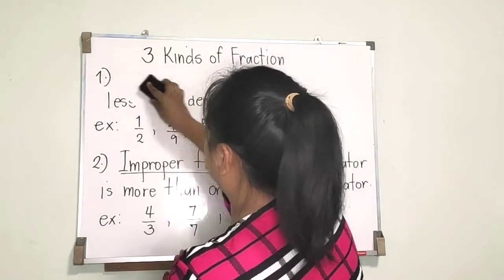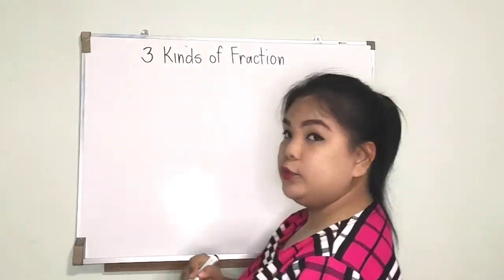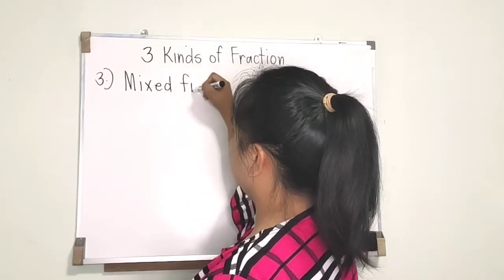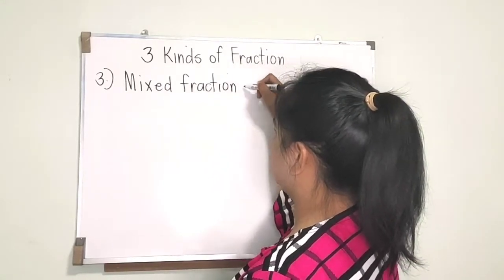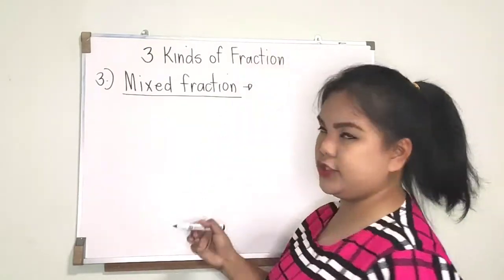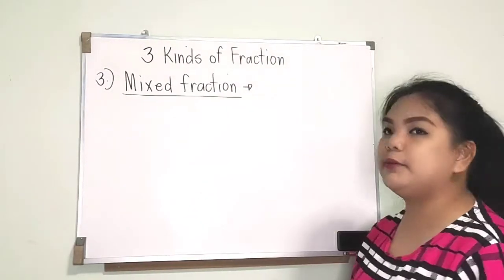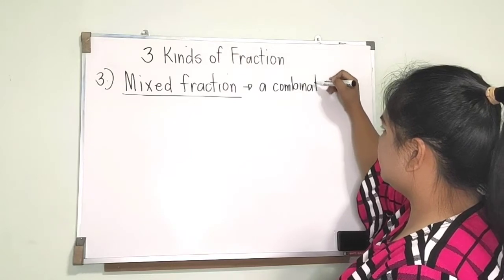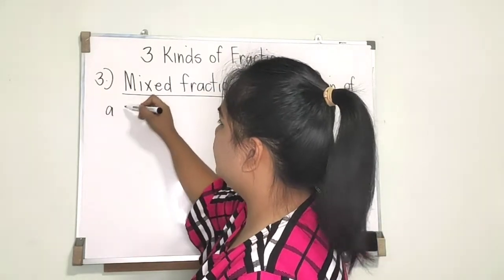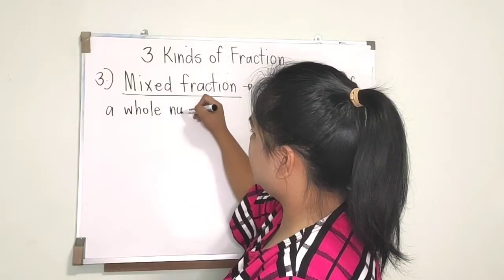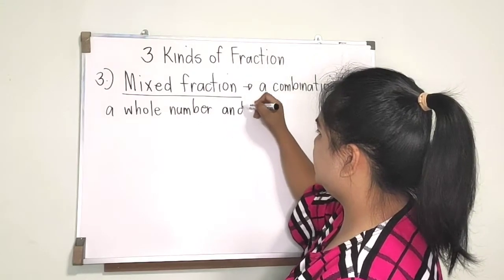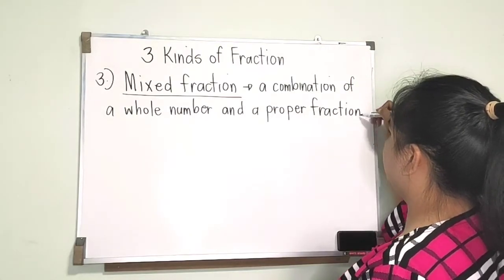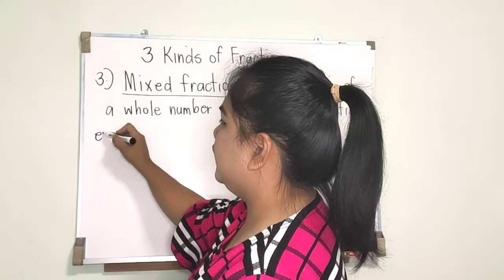The third kind of fraction is what we call mixed fraction — also called combined fraction in some books. A mixed fraction represents a combination of a whole number and a proper fraction.